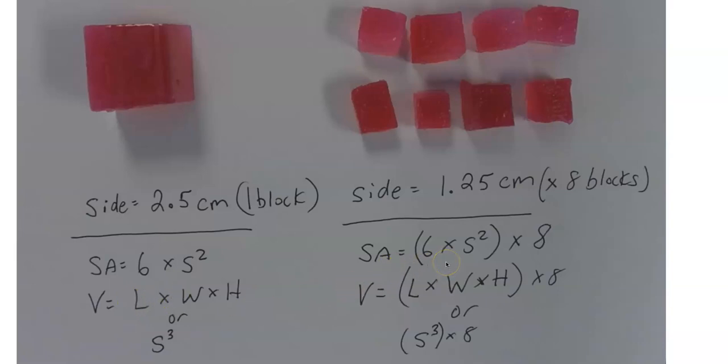The surface area is going to change, however. It's going to be the length times the width for one side, then times six for all sides. Then, after we multiply by six, we multiply that by eight for the eight cubes. So you're definitely going to get a different surface area.